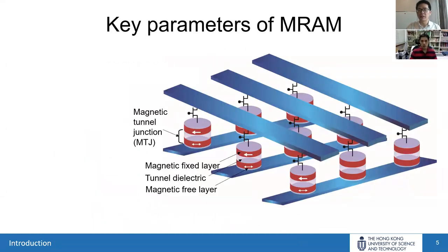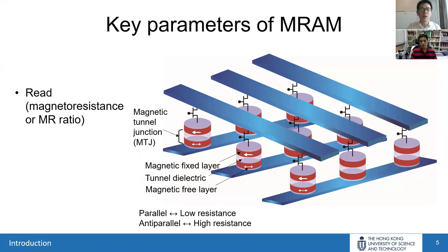For the purpose of introduction, the key component of MRAM is the magnetic tunnel junction, which consists of three layers: a magnetic fixed layer on top, a tunnel dielectric layer, and a magnetic free layer. The fixed layer has fixed magnetization that cannot be easily changed. The free layer's magnetization can be changed to alter the stored information. If the fixed and free layer magnetizations are parallel, you have low resistance; anti-parallel gives high resistance — this ratio determines reading efficiency.